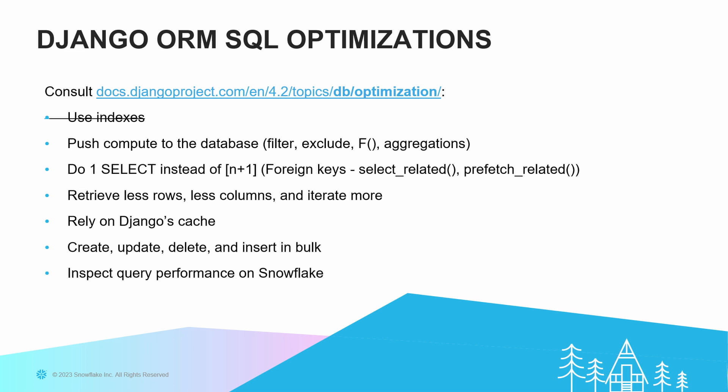When writing Django, we should learn how to optimize when it contacts the database. The first tip in the official docs is to use indexes — but with Snowflake, we don't need indexes, which is cool. Django teaches people to push the compute and filtering to the database, use prefetch_related, retrieve fewer rows. The Django cache works really well. With Django you can create inserts and updates — you should do them in bulk rather than one at a time; it's just one annotation. And of course, Snowflake lets you look at the whole query performance.